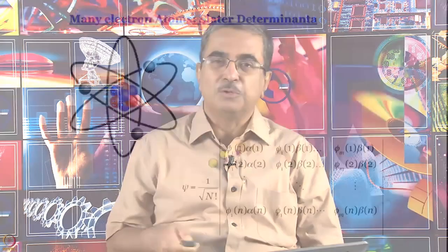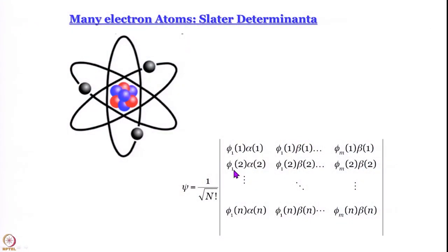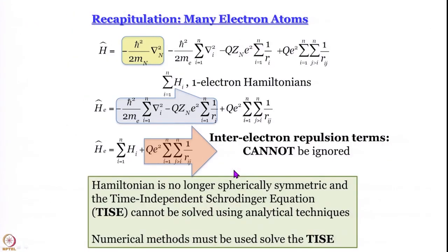We are learning about many-electron atoms. Today we are going to learn how to write their wave functions using a particular form — what are called Slater determinants, which look sort of like this. But before that, let us recapitulate very quickly what we have studied in the earlier modules.